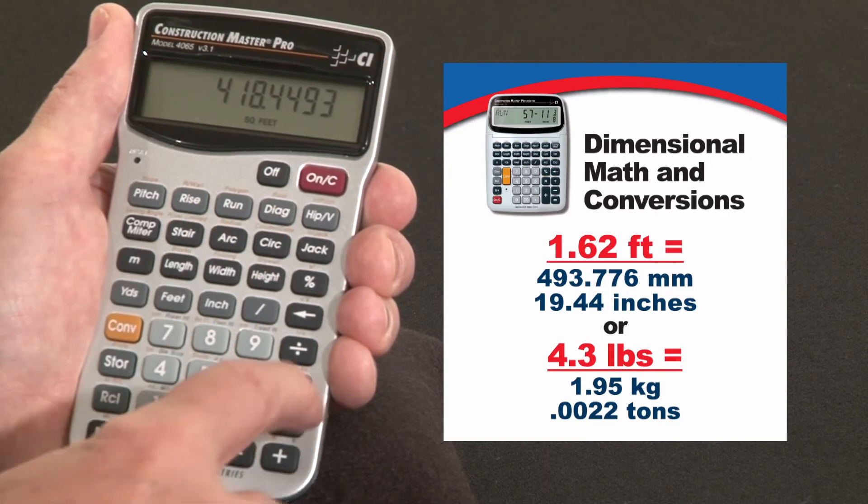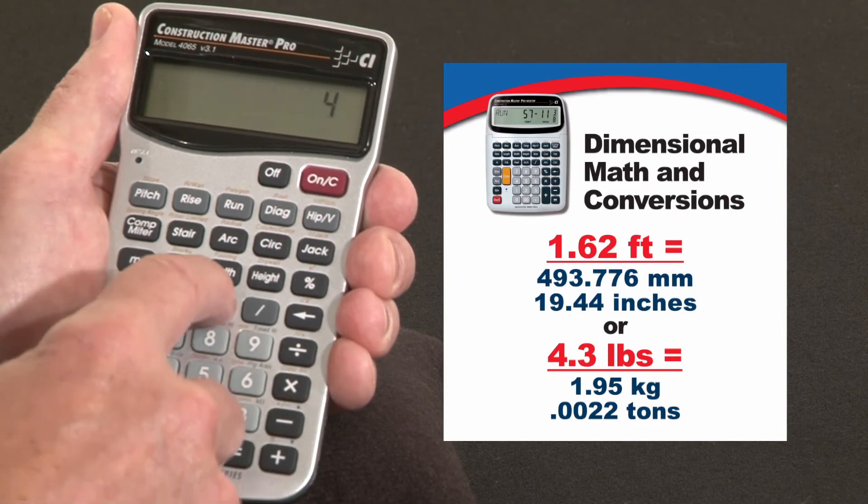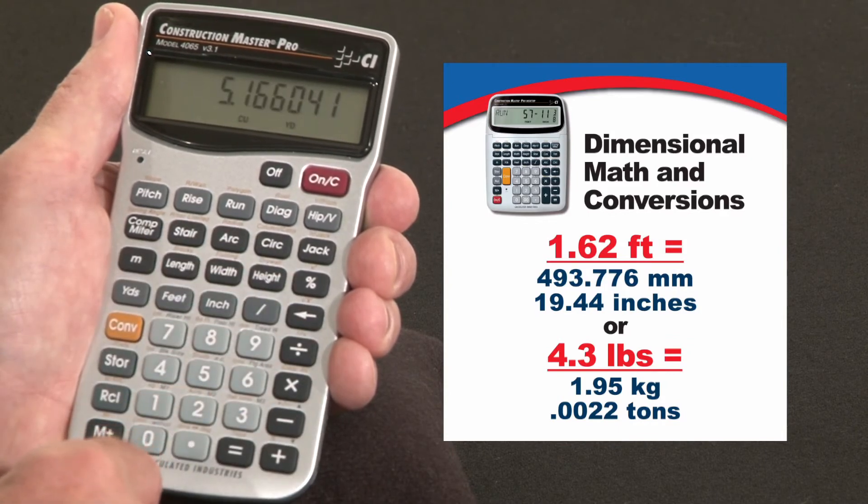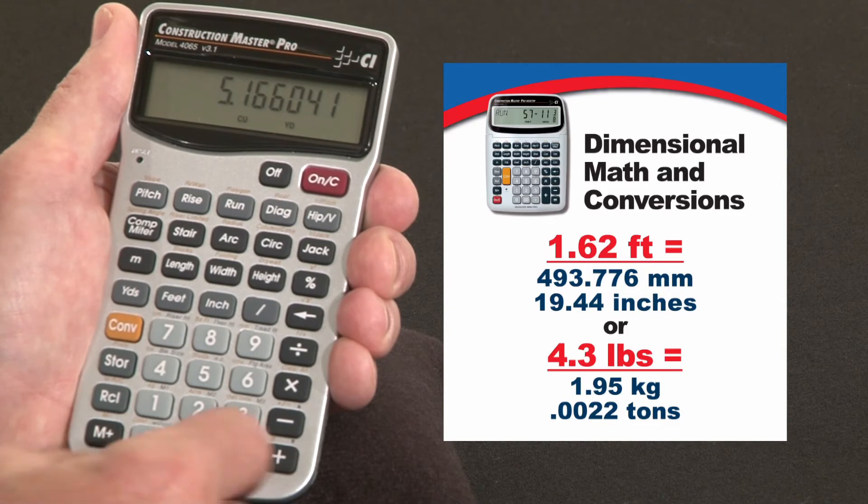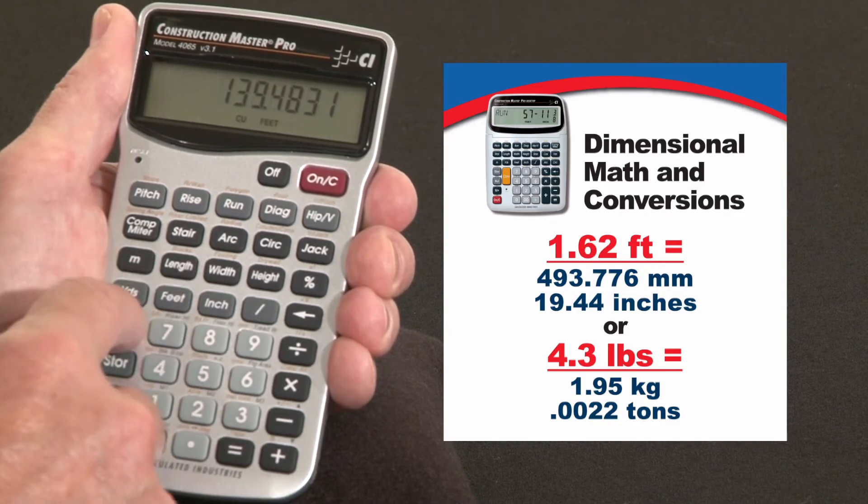Now let's say we're going to pour that four inches deep. By four inches equals five point one six cubic yards. You make the same conversions there to cubic feet or cubic meters.